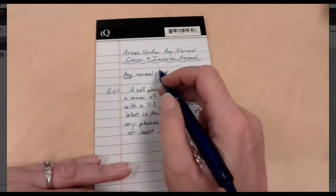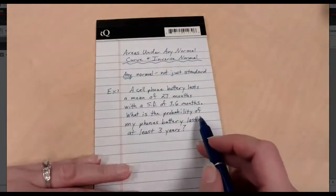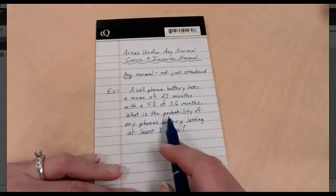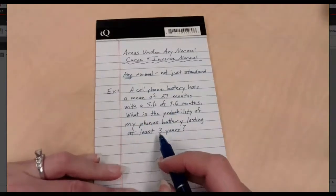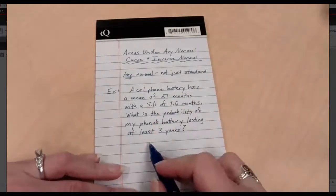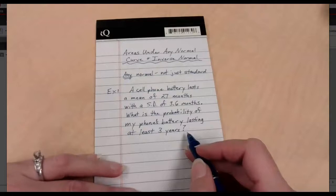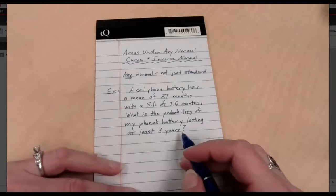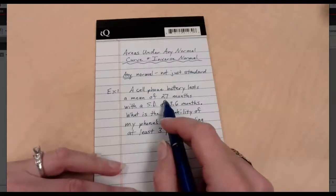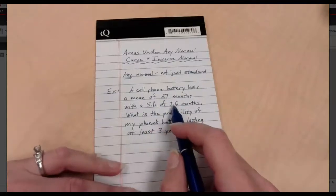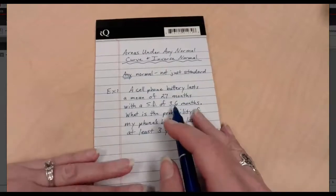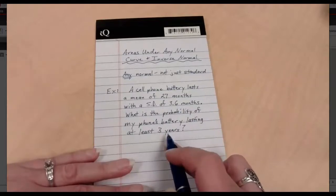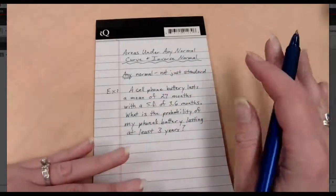So our example that we're going to use to demonstrate this idea here is that we've got a cell phone battery lasts a mean of 27 months, with a standard deviation of 3.6 months. And the question becomes, what is the probability of my phone's battery lasting at least three years? Well, if you look at this, this is not standardized. I don't have any z-scores. I have a mean that is 27, not zero. I have a standard deviation that's 3.6, not one.